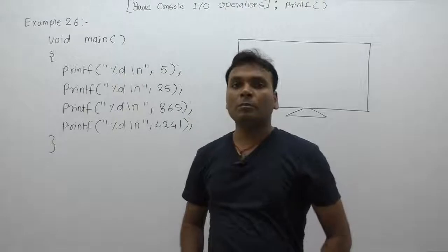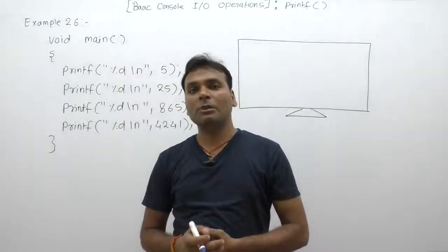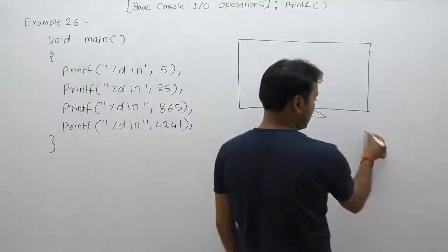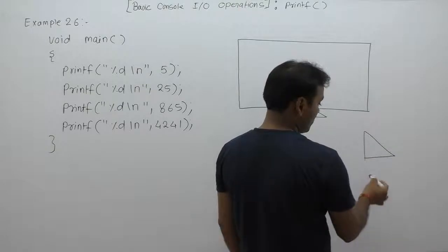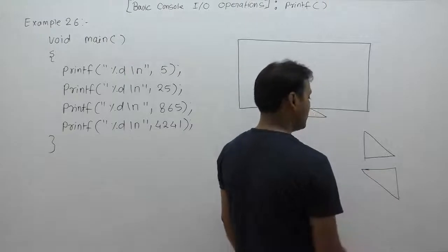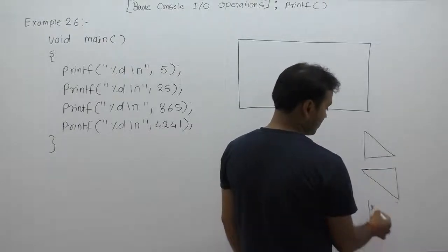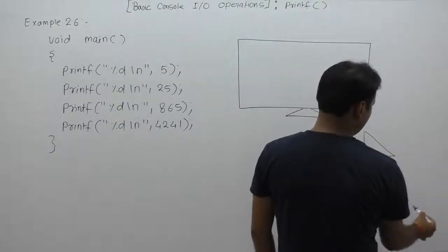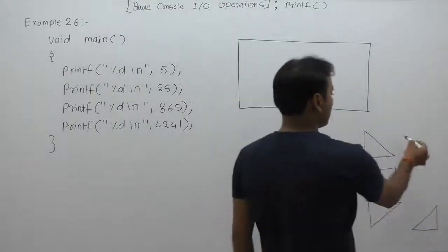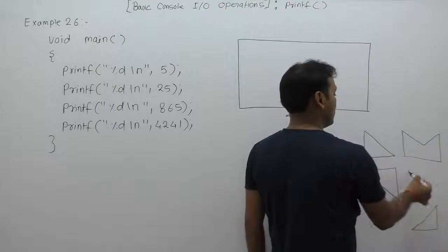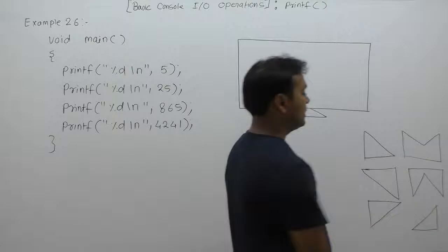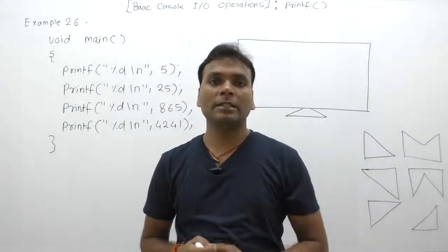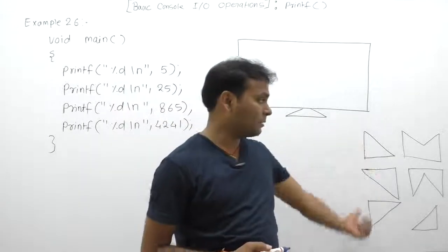Now we are discussing important properties of format specifiers. By using these properties we can display any value in required patterns — like displaying results in diamond shape, rectangular, or triangle format. There are different types of formats or patterns available. We can display this kind of output by using the printf function with the help of format specifiers by supplying extra information inside the format specifier.